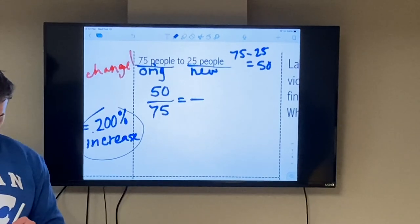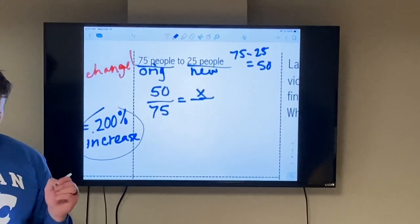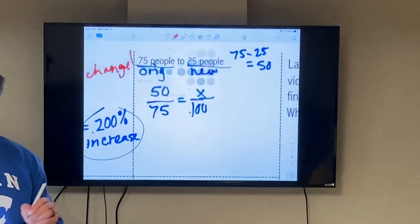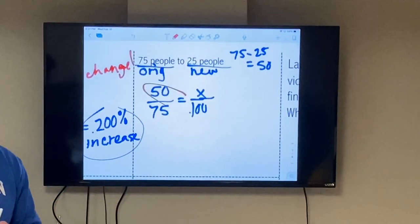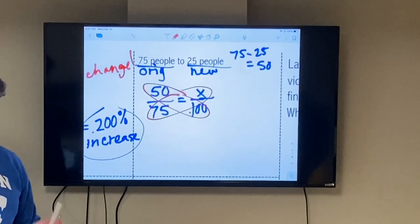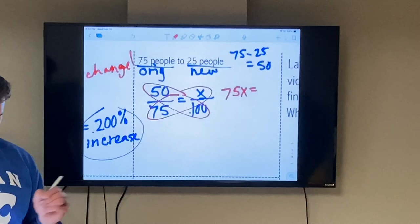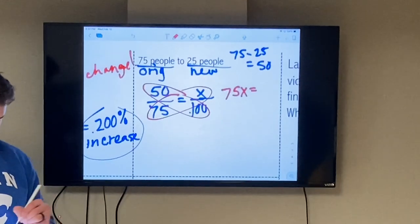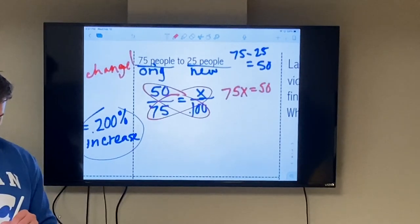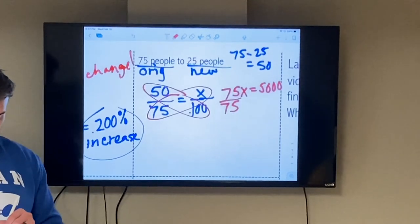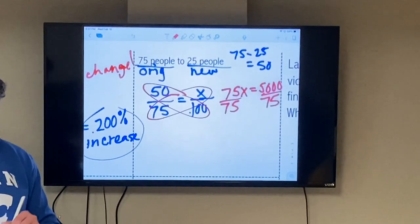Set that equal to, we'll call that x over 100. Now if you're in Mrs. Sherrard's class, I'll solve it this way. Now we're going to multiply diagonally across for both, so that gives me 75x is equal to 50 times 100, which is 5,000. Now I need to divide by 75 to both sides.